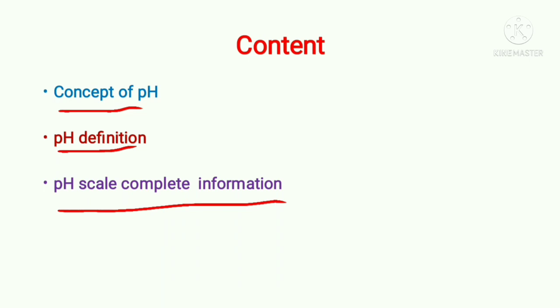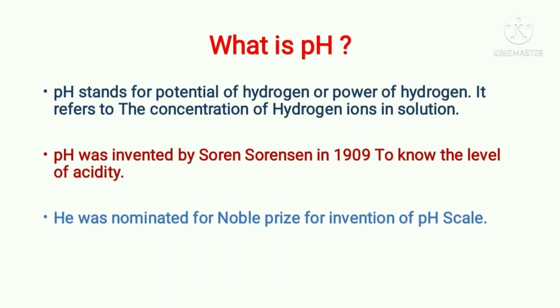So first we'll see what is pH. pH stands for potential of hydrogen or power of hydrogen. This pH refers to the concentration of hydrogen ions present in solution. pH only indicates how much hydrogen plus ions are present in the solution.